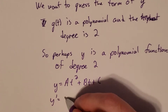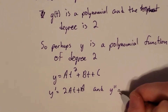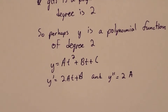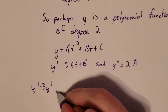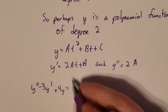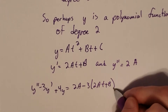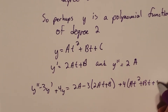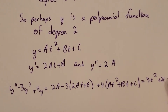Then y prime is equal to 2at plus b. And y double prime is equal to 2a. So substituting into the ODE: y double prime minus 3 times y prime, which is 2at plus b, plus 4 times at squared plus bt plus c. And this is supposed to equal 3t squared plus 2t minus 4.